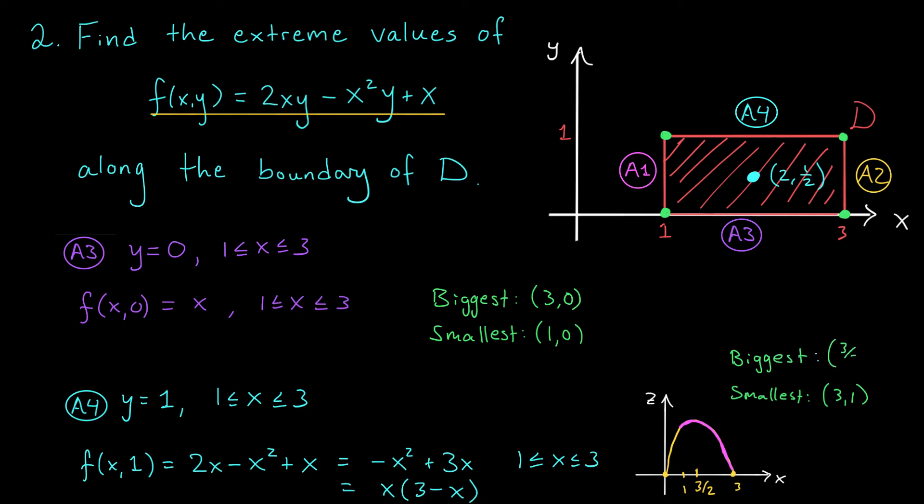All right folks, let's take a step back and look at what we've done here. We've located all critical points of our function in the region D. In this case, there's just one. We've also identified five extreme points along the boundary of D. These six points together make up all candidates for the location of a global max or min. We're now ready to move on to the last stage of our problem.